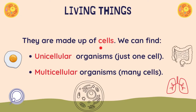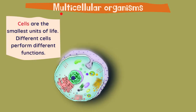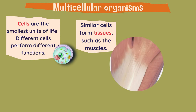Living things are made up of cells. We can find unicellular organisms that have just one cell, and multicellular organisms that have many cells. We are going to focus on the multicellular organisms and learn about their structure. Cells are the smallest units of life, and different cells perform different functions, so we have specific cells for every function.